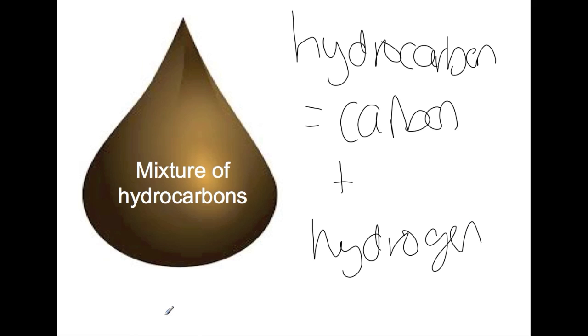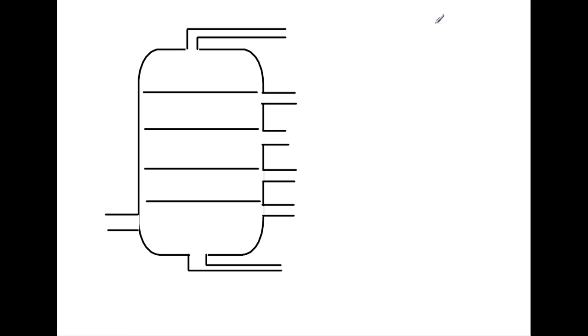Crude oil needs to be separated into different hydrocarbons before it can be used. The hydrocarbons differ in the length of their carbon chain. Fractional distillation is used to separate out this mixture of hydrocarbons.